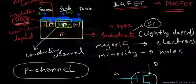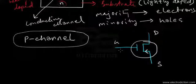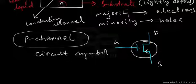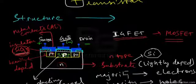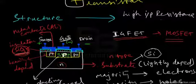In the circuit symbol, we have the gate, the drain, and the source. For a p-channel MOSFET, the arrow mark is directed towards the gate at the source terminal. Notice there is no physical contact between the gate and the channel in the symbol, representing the insulation layer between them. The gate and semiconductor substrate, with an insulator between them, give the MOSFET a very high input resistance — in the order of 10⁴ to 10⁹ megaohms.